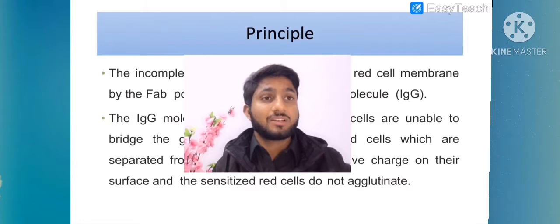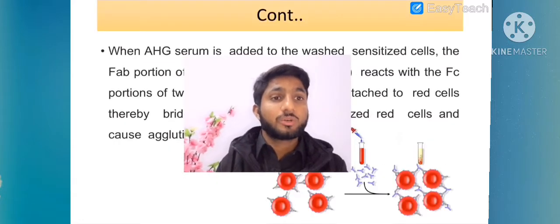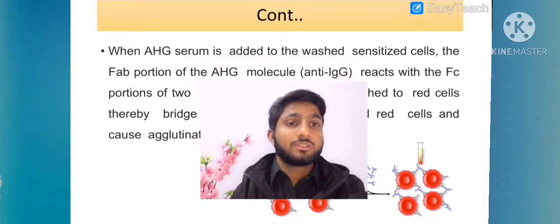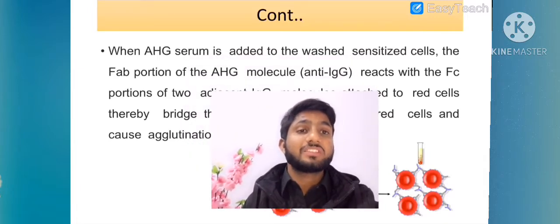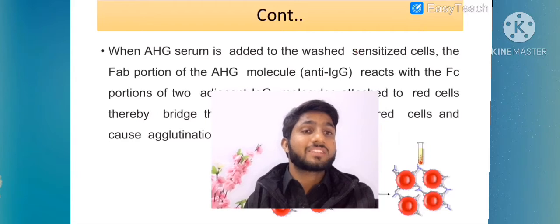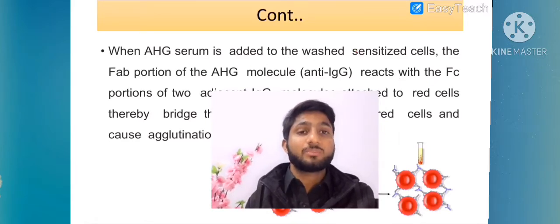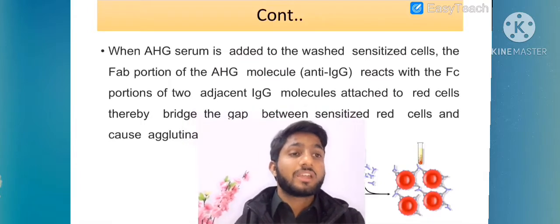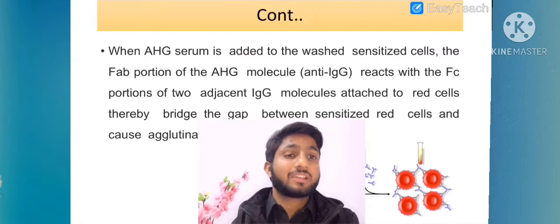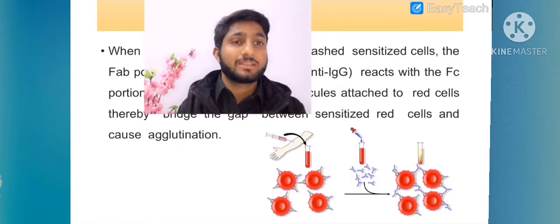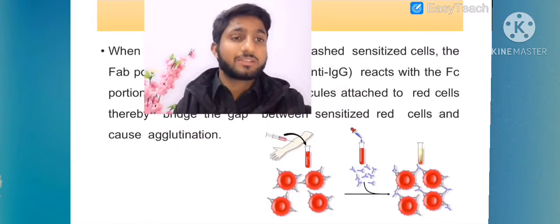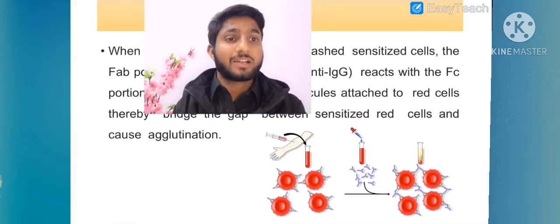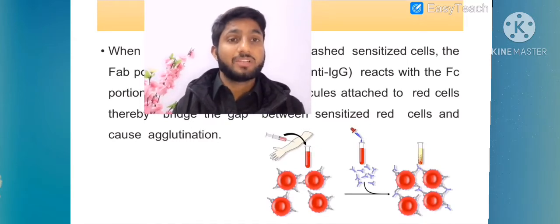This is the principle: sensitized red cells do not agglutinate, but by adding anti-human globulin protein, this protein facilitates the process of agglutination. When AHG serum is added to the washed sensitized cells, the anti-IgG portion of the AHG molecule reacts with the FC portion of two adjacent IgG molecules attached to red cells, thereby bridging the gap.